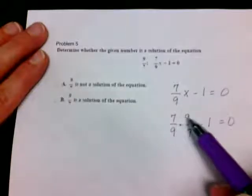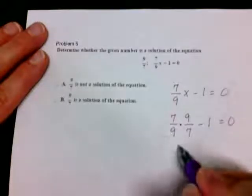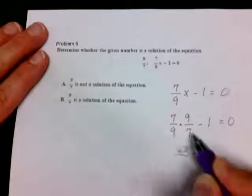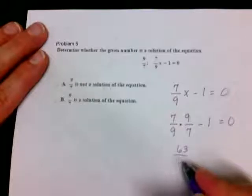Now, when we multiply fractions, we multiply the tops. So 7 times 9 is 63. And we multiply the bottoms. 9 times 7 is 63.